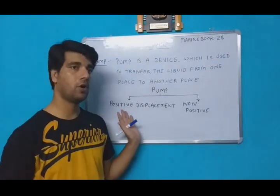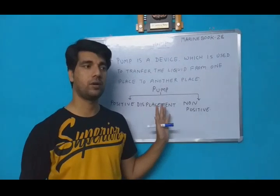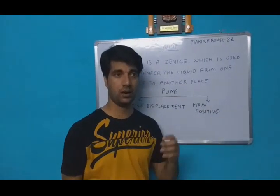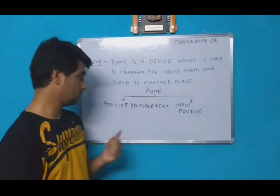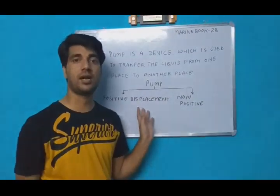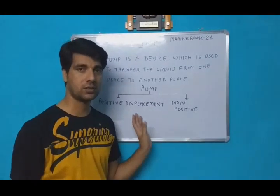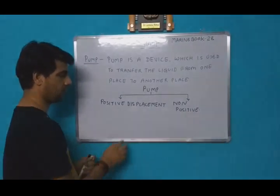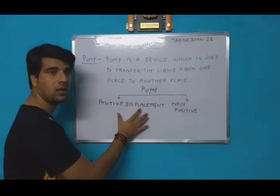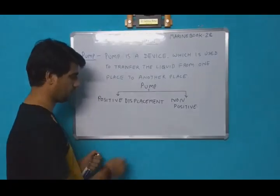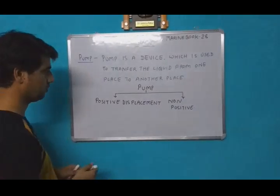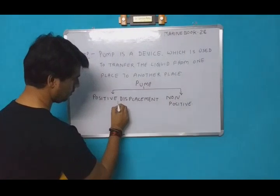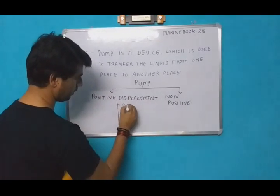So these are the two categories: positive displacement type pump and non-positive displacement type pump. Why is a pump called a positive displacement type pump? Because a positive displacement type pump always gets a steady flow of the liquid — the flow will be regular. There are different types of positive displacement pumps used on board the ship. Number one is the reciprocating pump.